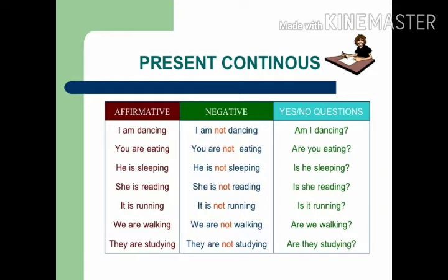For example: 'I am dancing' — positive sentence. Negative: 'I am not dancing.' Yes/no question: 'Am I dancing?' Next: 'You are eating' — positive. Negative: 'You are not eating.' Yes/no question: 'Are you eating?' These are the ways we write positive, negative, and yes/no questions in present continuous tense.